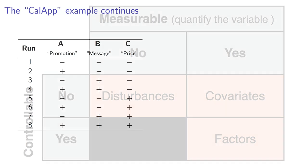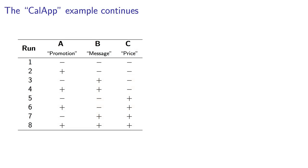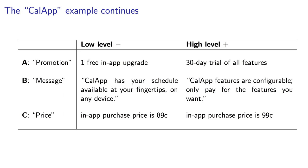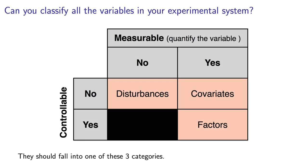Remember the cell phone app example from the previous class? Recall the variables from that example were factor A, the type of marketing promotion used, either a free in-app purchase or a 30-day trial of all the features. Factor B was the marketing message and factor C was the in-app purchase price. All three of those were controlled and measurable, where the term measurable is used fairly loosely as a way to say that you can quantify the value of your factor.